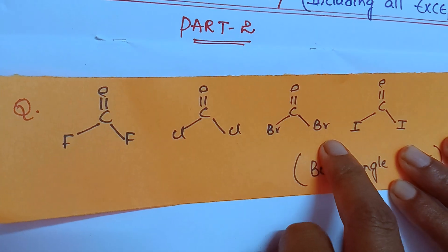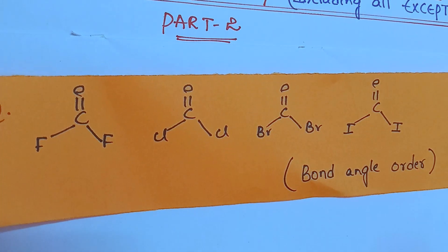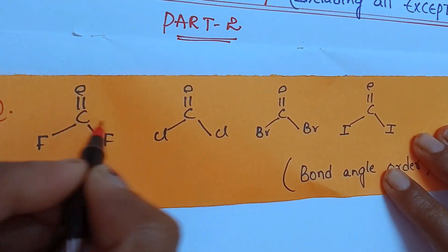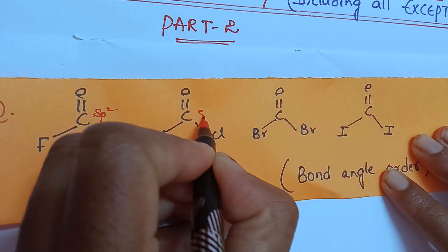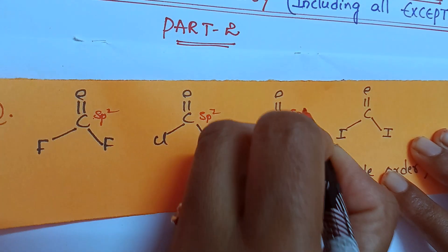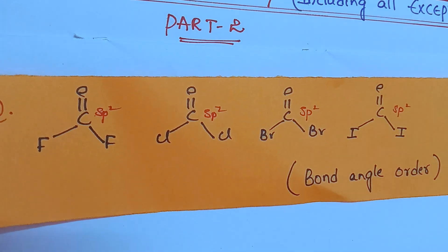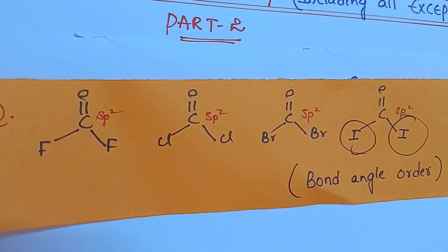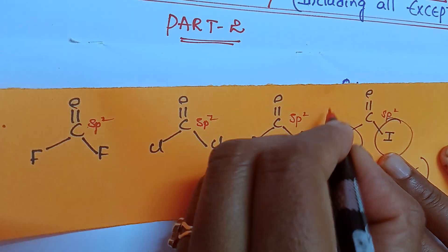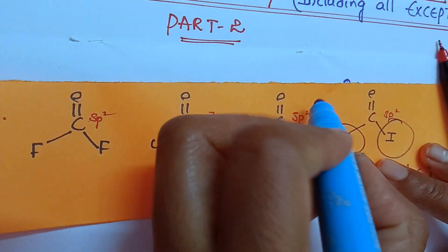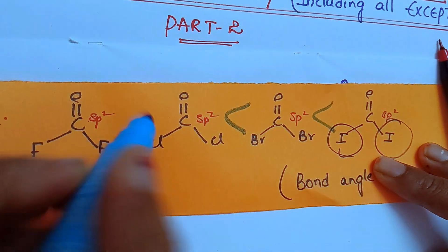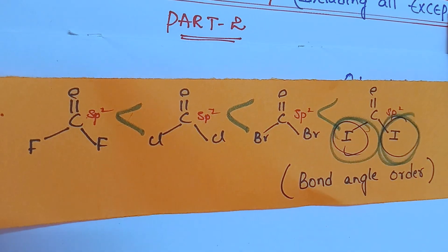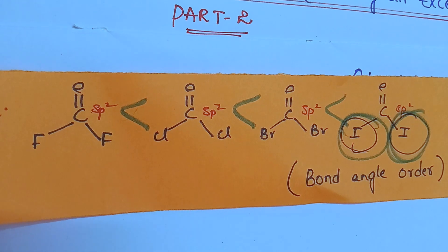Now see the next example: CoF2, CoCl2, CoBr2, CoI2. Here, hybridization is the same — SP2 for all, because a double bond is present. When the size of the bonded atom increases, you can simply say that bond angle also increases, because the bigger atoms create more repulsion.